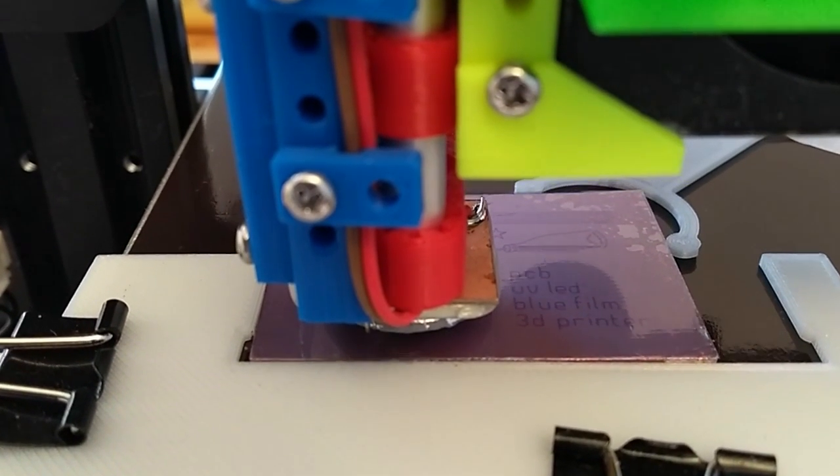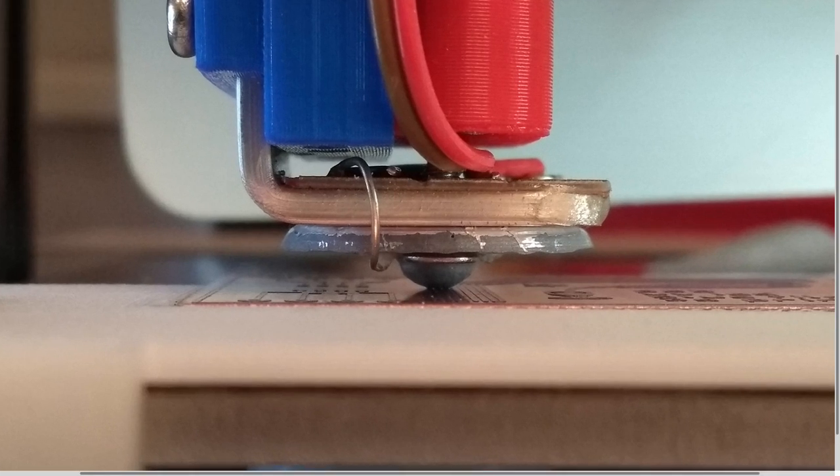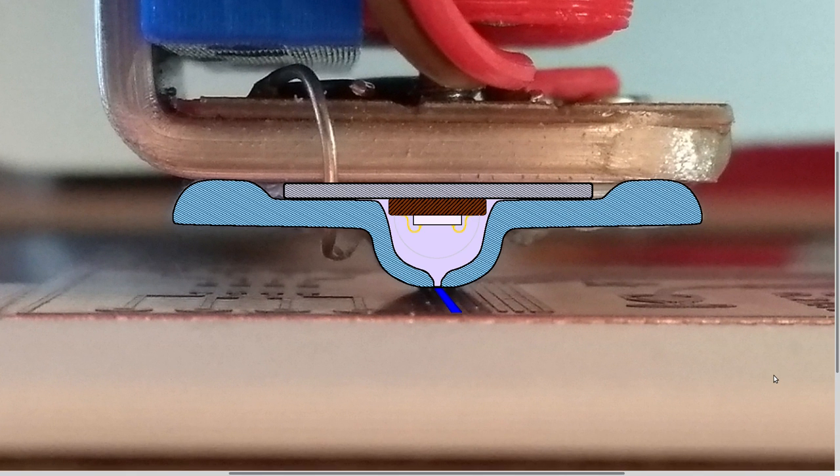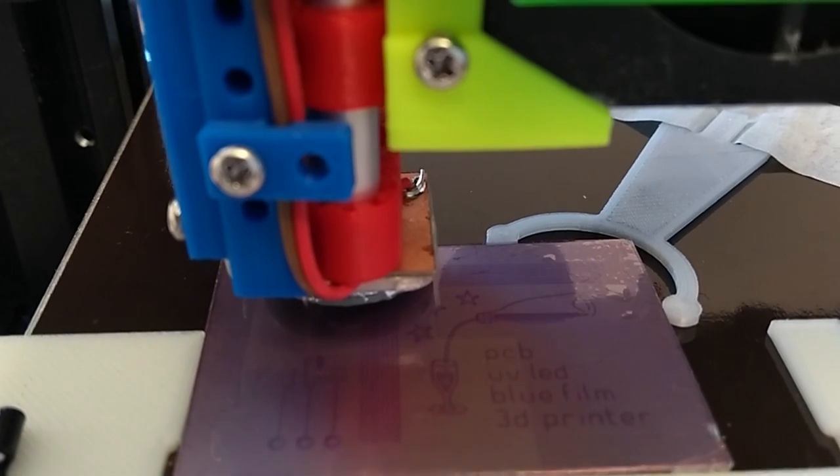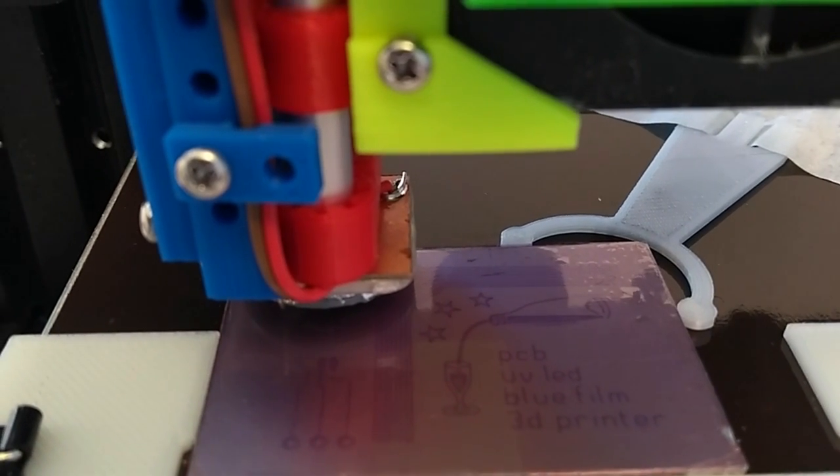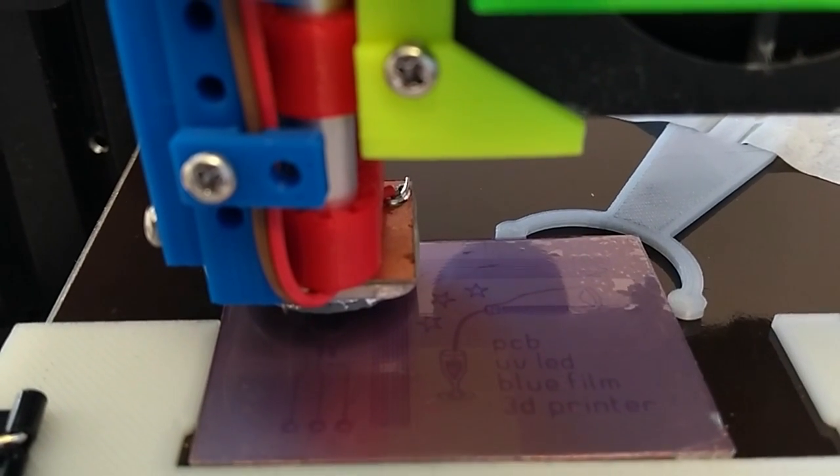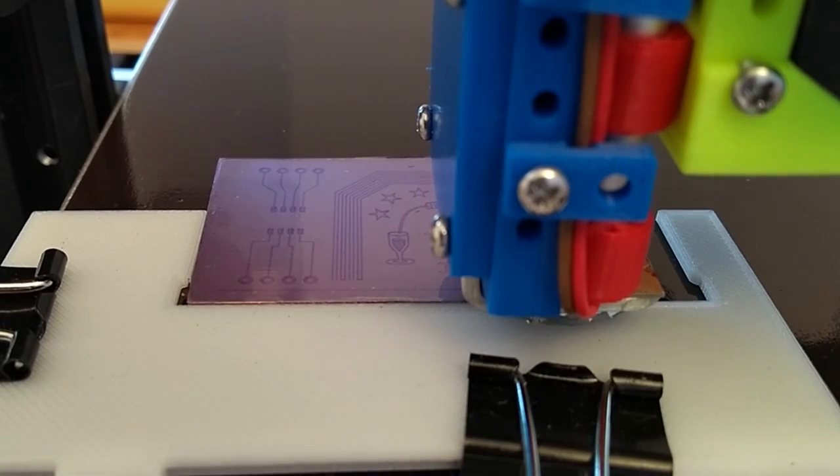The head containing the UV-LED moves over the film. The UV-LED switches on where the film needs to be exposed. All the time the film is exposed or not, the head remains on the film, so there is no vertical movement of the head.